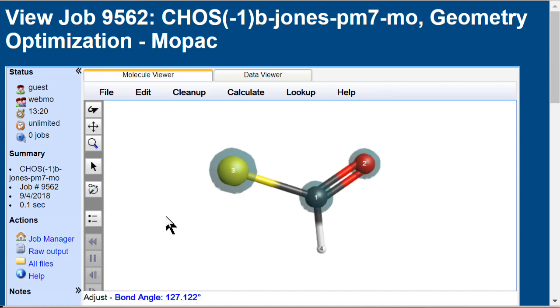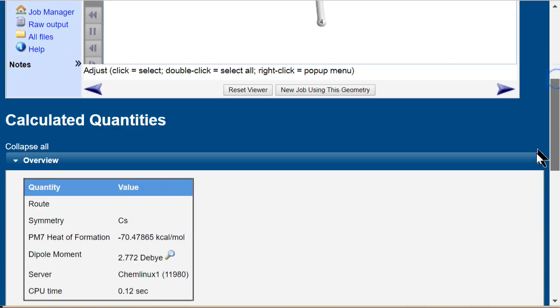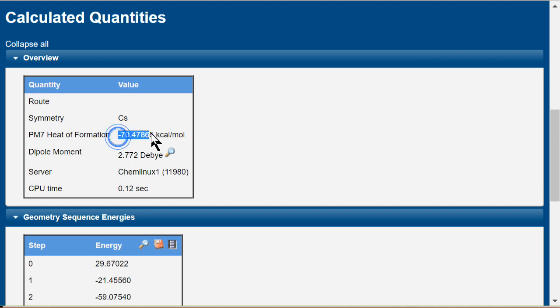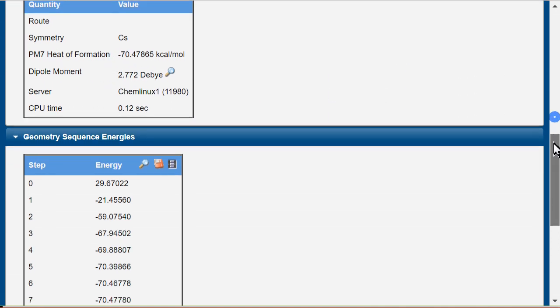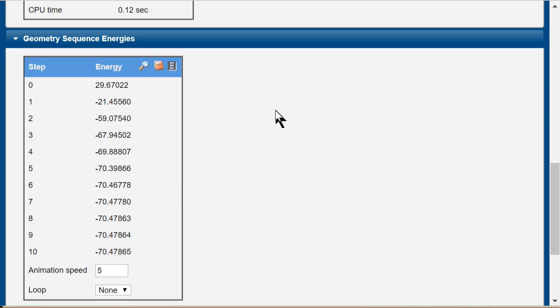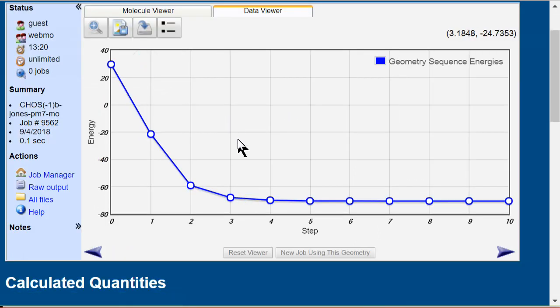Heat of formation is minus 70.48. The geometry sequence indicates that it required 10 steps to achieve the most stable geometry. The graph indicates that distorting the planar geometry destabilized the structure by a whopping 100 kcal per mole.